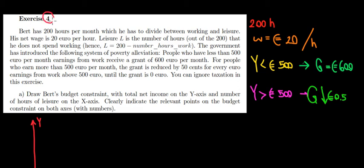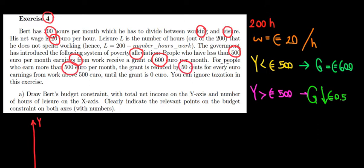Let's have a look at question 4. We have 200 hours per month to divide between work and leisure. The net wage is 20 euros per hour. There is a poverty alleviation system: if we earn less than 500 euros per month from work, we receive a grant of 600 euros per month. If we earn more than 500 euros per month, the grant is reduced by 50 cents for every euro in earnings until the grant reaches 0 euros.